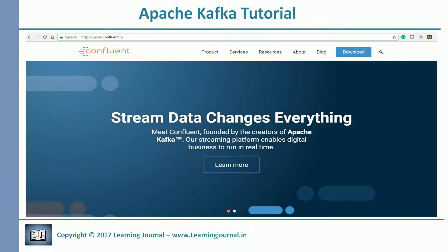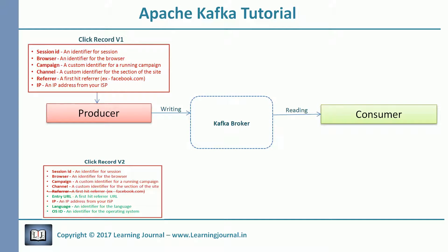In this session, we will install and configure the open source version of the Confluent platform and execute our producer and consumer. Then we will modify our schema and create a new version of the prior schema. Then we will create a new producer to send some messages based on the new schema. This example will show us schema evolution in action.